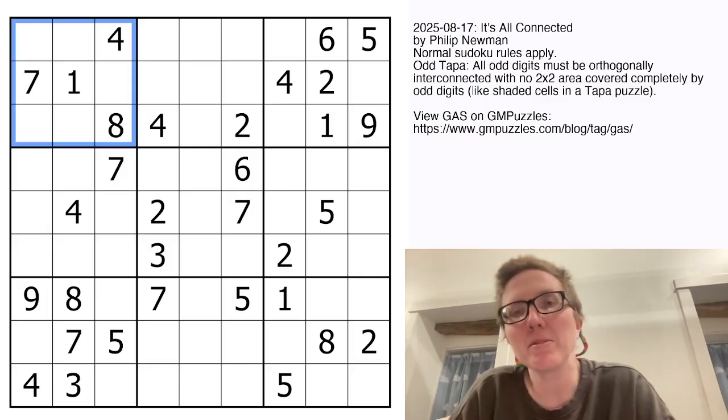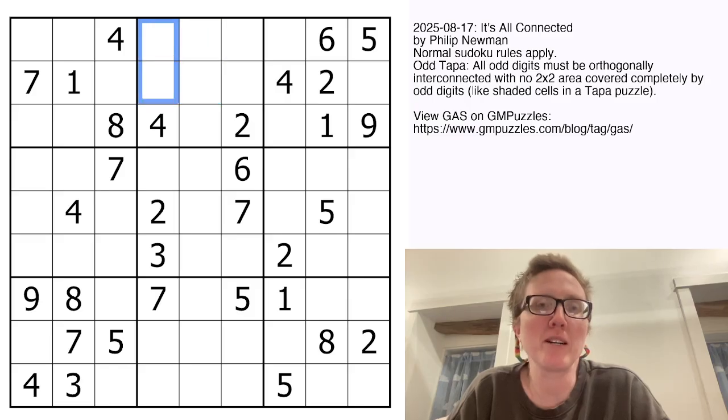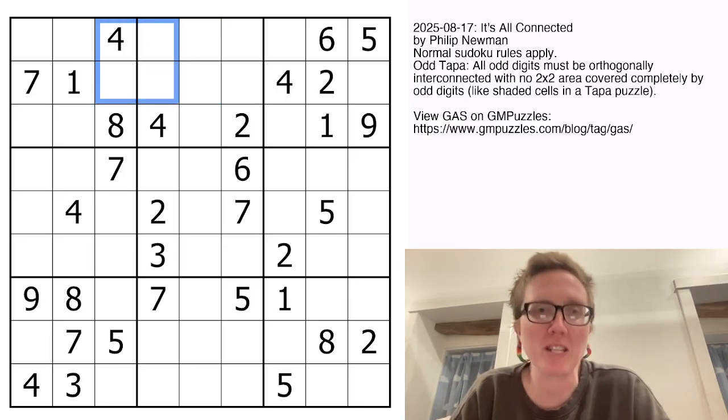Also, there cannot ever be a two by two area, like a two by two square, that is entirely odd. So every two by two square has to have at least one even digit in it.